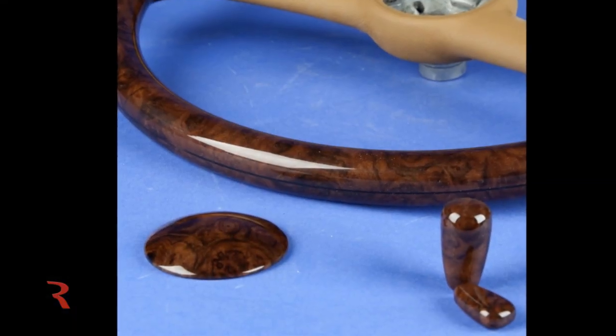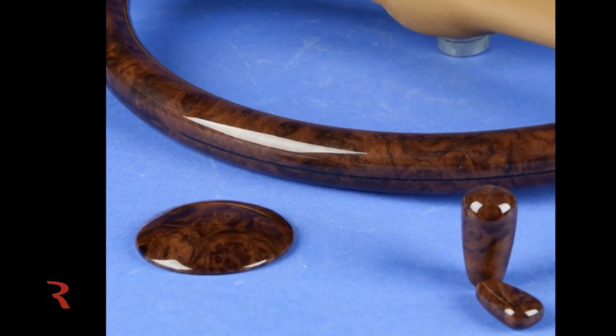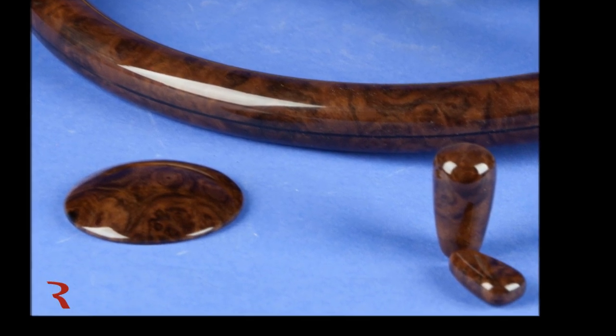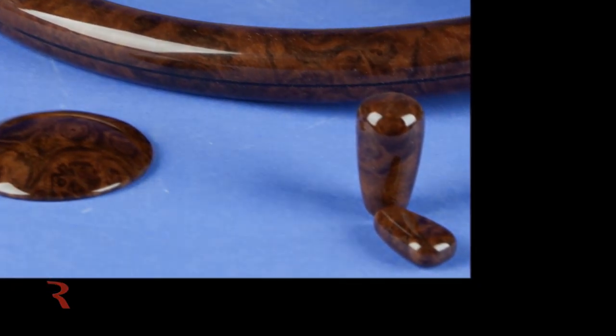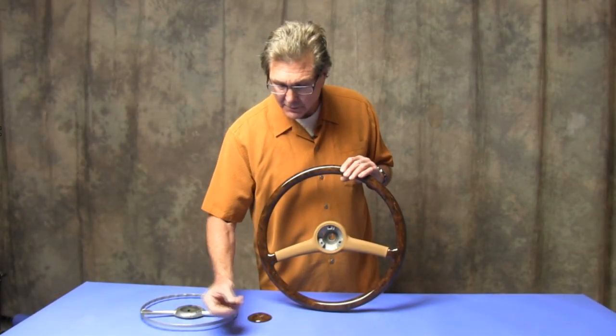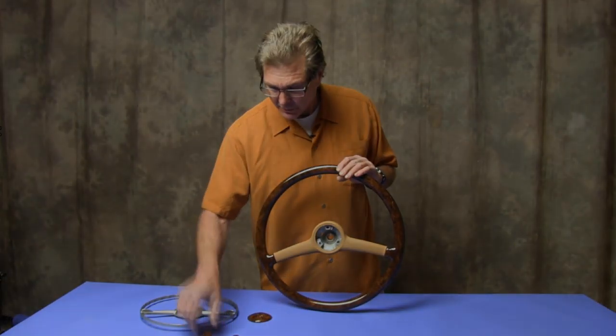The horn button was also veneered, and he's going to have a silver logo for the Mercedes placed on that. A few additional pieces of knobs that finish off the steering wheel area.